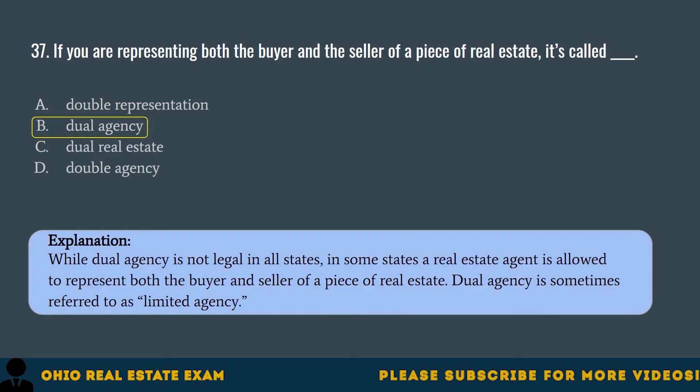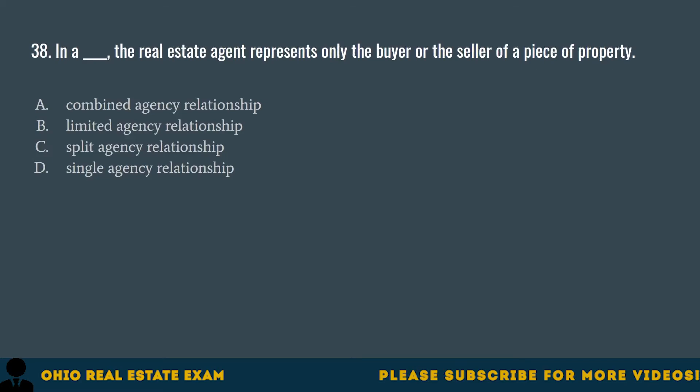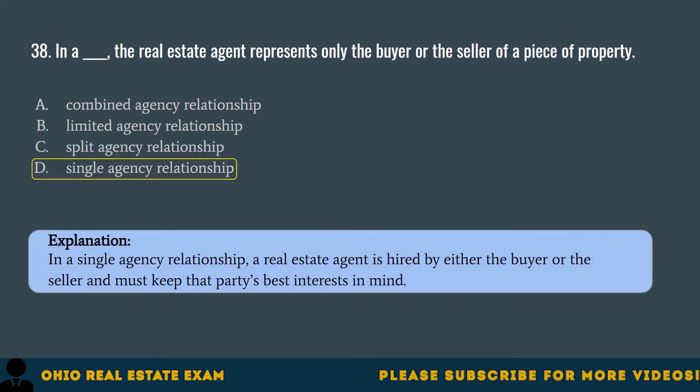Question 38. In a blank, the real estate agent represents only the buyer or the seller of a piece of property. A. Combined agency relationship. B. Limited agency relationship. C. Split agency relationship. D. Single agency relationship. The correct answer is D. Single agency relationship. In a single agency relationship, a real estate agent is hired by either the buyer or the seller and must keep that party's best interest in mind.